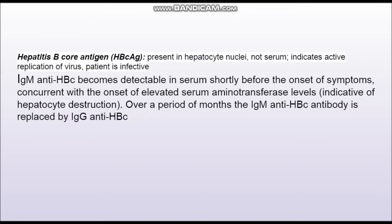Going to HBcAg — this is important because it is the only antigen not found in the serum; it is found only in hepatocyte nuclei. However, it indicates active replication of the virus. The antibody to HBcAg, anti-HBc, can be of two types: IgM and IgG. IgM antibodies denote an acute infection, while IgG antibodies denote chronic infection. So the body first produces the IgM variant of anti-HBc antibody and then the IgG variant.